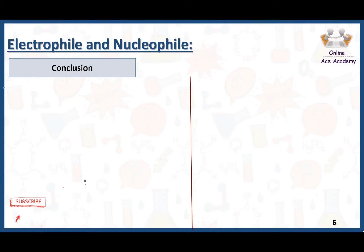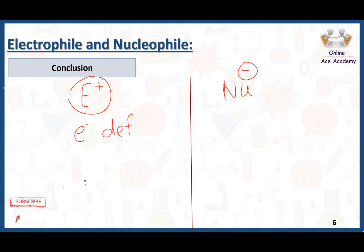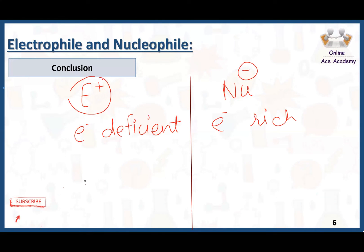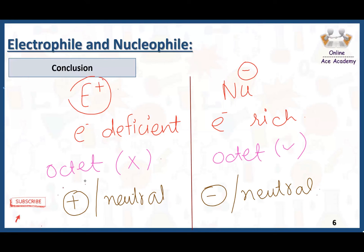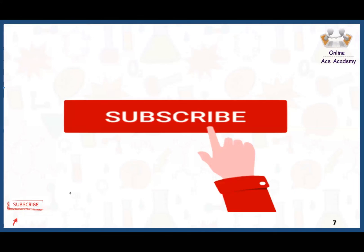In today's lecture we talked about electrophiles and nucleophiles. Electrophiles are represented with a positive charge and nucleophiles with a negative charge. Electrophiles are electron lovers — they are electron deficient, which is why they love electrons. Nucleophiles are nucleus lovers and are electron-rich species. The octet of the central atom for an electrophile is not complete, but the octet for a nucleophile is complete. Electrophiles are positively charged or can be neutral, while nucleophiles can be negatively charged or neutral. If you like this video, please do subscribe. Thank you very much.